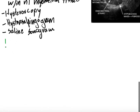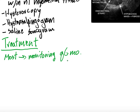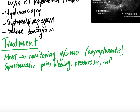Last is treatment. Most patients just require monitoring every six months — primarily for asymptomatic or minimally symptomatic ones. If a patient is symptomatic — defined as pain, bleeding, pressure symptoms like constipation, hydronephrosis, or venous stasis — or infertility in patients having trouble getting pregnant, there are several different options.